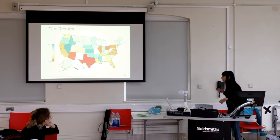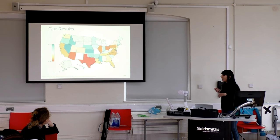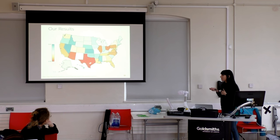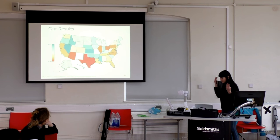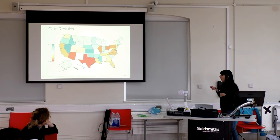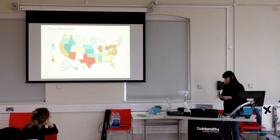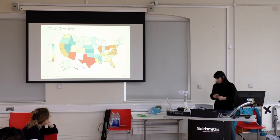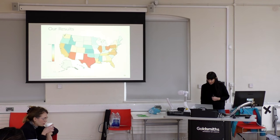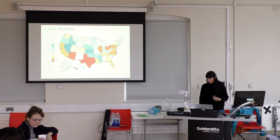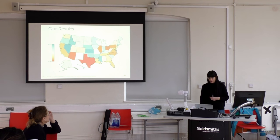We believe that because every single state was improved upon by our algorithm, a lot of gerrymandering might not just be purposeful — people may simply not be able to draw good maps because the cognitive demands of the task are too great. This is an overview of our results: states are coloured based on how much our algorithm improved on them. Texas, for example, has seen a huge improvement. States with smaller improvement generally have fewer districts, making them easier to draw.